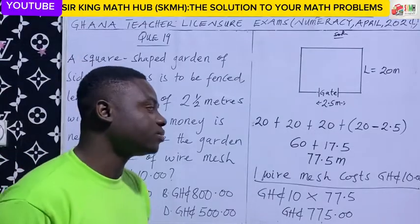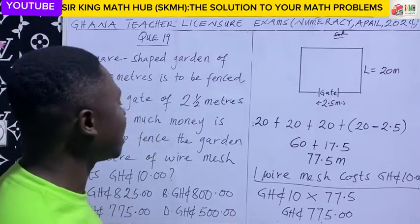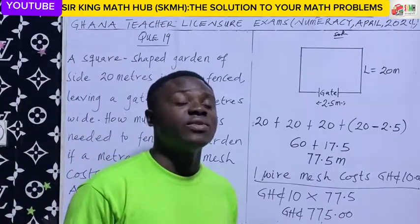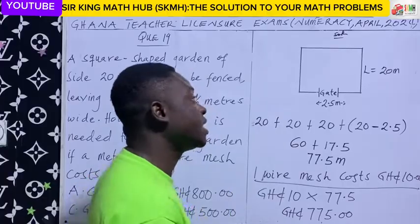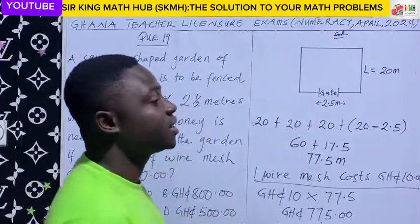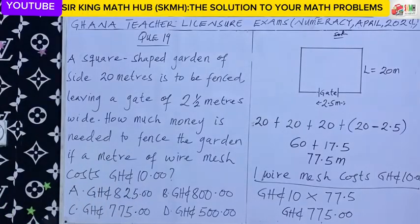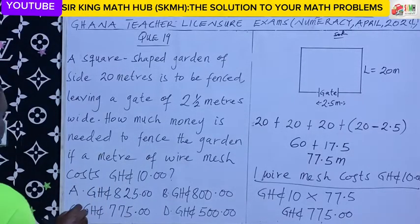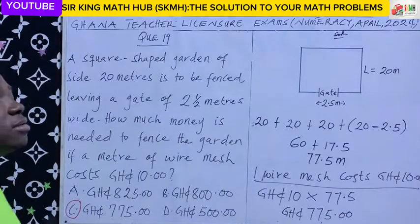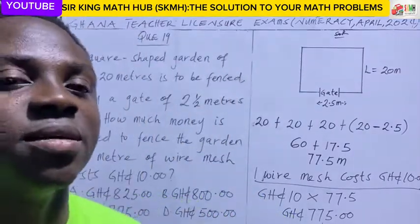In conclusion, it will cost 775 Ghana cedis to fence around this square-shaped garden. Looking at the alternatives, the correct answer is C. I hope you enjoyed this episode. See you next time.